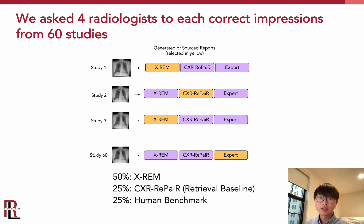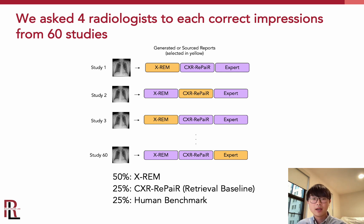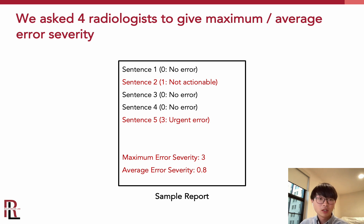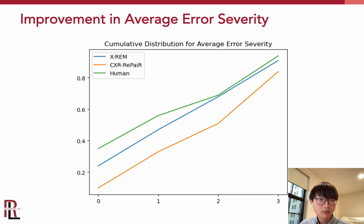We also asked our radiologists to evaluate the quality of the generated reports. We assigned 60 studies to each radiologist: half from X-Frame, 25% from CXR Repair, and 25% generated by humans. The radiologists measured the error severity of each line in the report — for example, the second and fifth sentences of a candidate report received error scores of one and three. We then collected two summary error severity scores: the maximum error severity (the highest error score across lines) and the average error severity (the average of all error scores). We observed a noticeable improvement over CXR Repair in terms of average error severity.